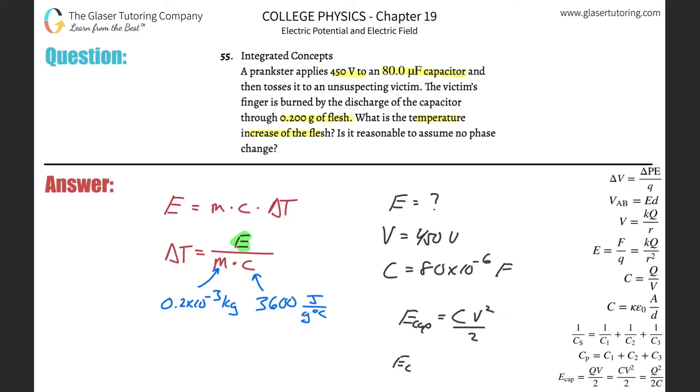So all we have to do is find this now. Capacitance is going to be 80 times 10 to the minus 6, multiplied by that voltage, 450, squared, all divided by two. And what does that equal? Well, let's see. So the energy that's stored in that capacitor is 80 times 10 to the minus 6, multiplied by 450 squared, divide that by two. So it comes out to be about 8.1 joules.